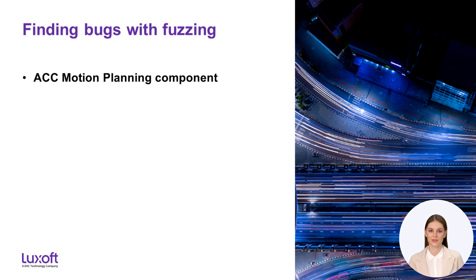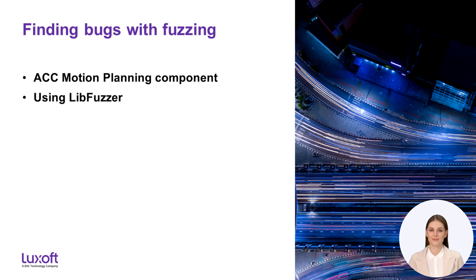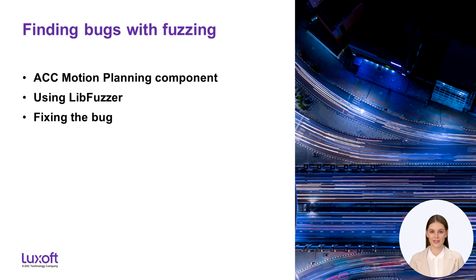We will now demonstrate how to use fuzzing to detect and fix a bug in one of our software components. First we will introduce the software component — the ACC motion planner. Then we will use libFuzzer, a gray box fuzzer, to find a bug in the software. Then we will analyze and fix the bug.